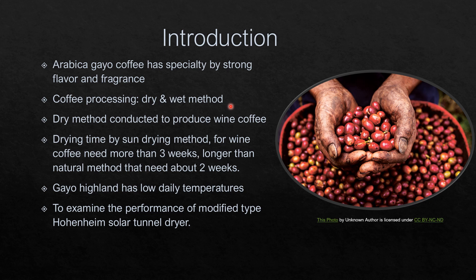Recently, we also have a new product called wine coffee, which has a strong and distinct floral flavor. The total drying time needed to dry coffee under natural processing is more than two weeks. Moreover, the time needed to produce wine coffee is more than three weeks. This problem becomes harder in Gayo Highland, since the area has a low daily average temperature of 26 degrees centigrade.